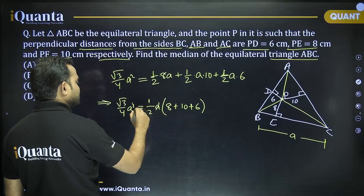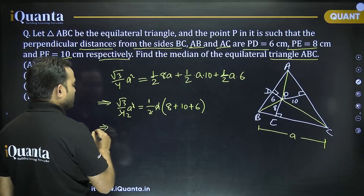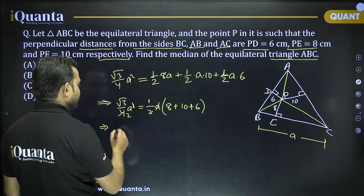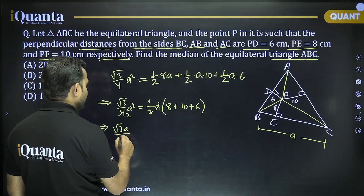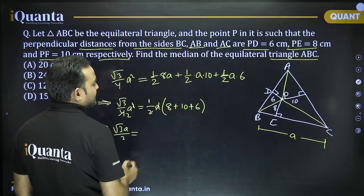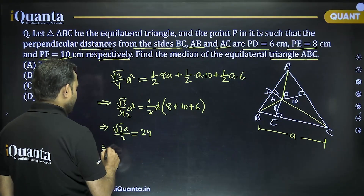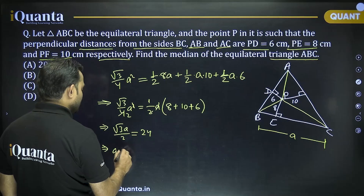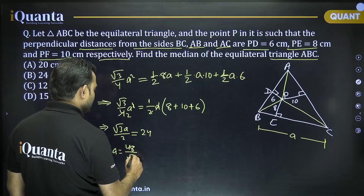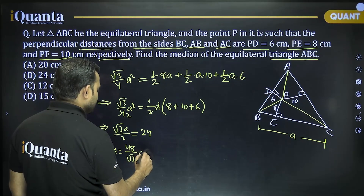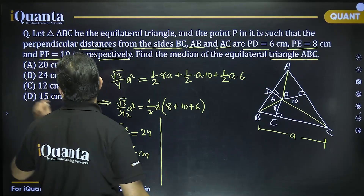Simplifying: 24 = (√3/2)a, so a = 48/√3 cm.